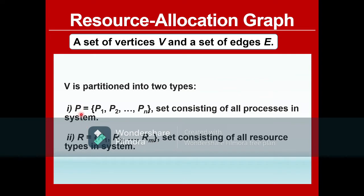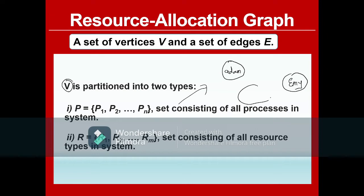To give an example of processes and resources in the system: consider two people, Adam and Amy, as our two processes. They want to cook breakfast and both of them need a frying pan. So the frying pan is our resource. There is only one frying pan. These two processes are P1 and P2, and the frying pan is resource R1. All three are considered as vertices.